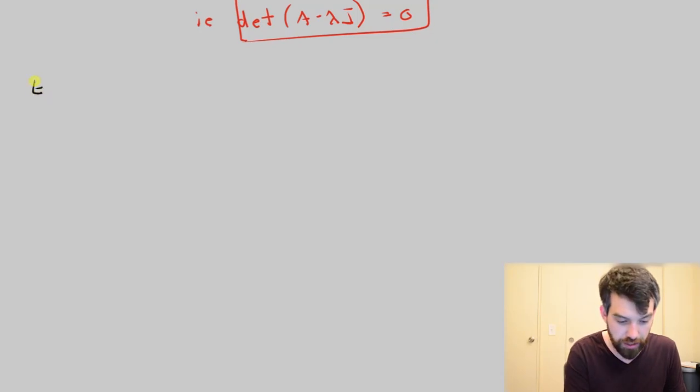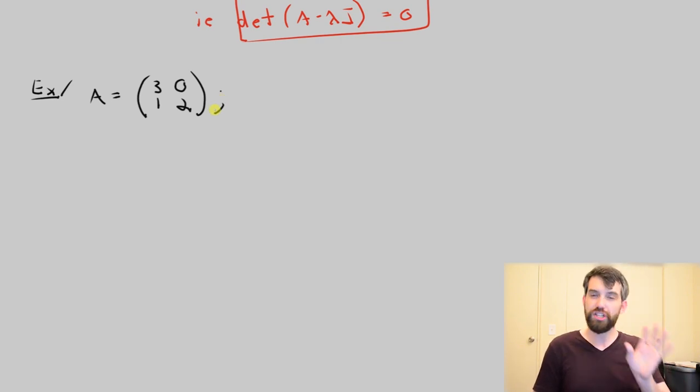The example that I'm going to use is the matrix that we have seen before. My matrix is going to be 3, 1, 0, 2. That's just the A.